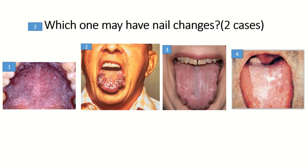As mentioned, nail changes can be found in Darier disease with diffuse leukokeratosis, and in dyskeratosis congenita with patchy leukokeratosis, especially on the tongue.